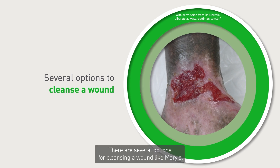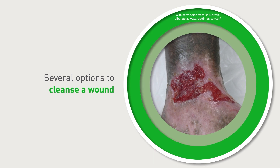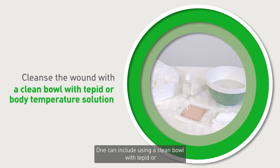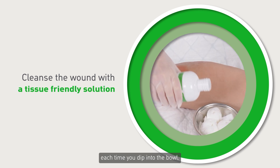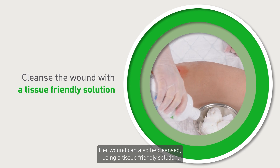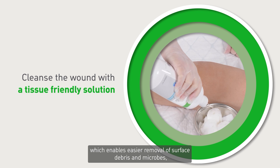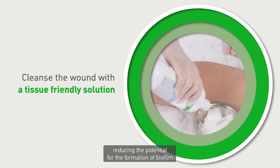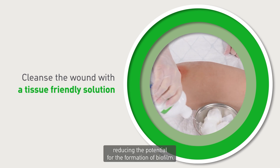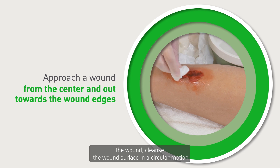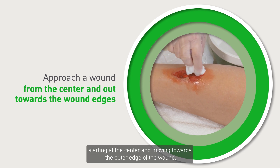There are several options for cleansing a wound like Mary's. One option includes using a clean bowl with tepid or body temperature solution, using a new cloth or gauze pad each time you dip into the bowl. Her wound can also be cleansed using a tissue-friendly solution, which enables easier removal of surface debris and microbes, reducing the potential for the formation of biofilm. When approaching the wound, cleanse the wound's surface in a circular motion, starting at the centre and moving towards the outer edge of the wound.